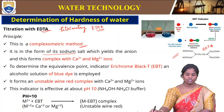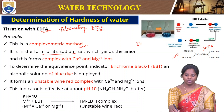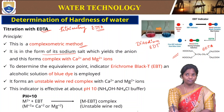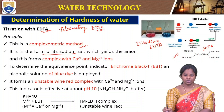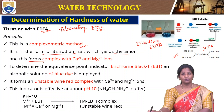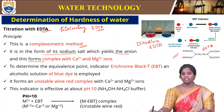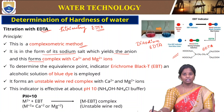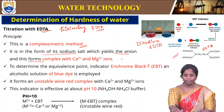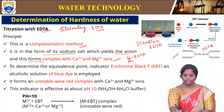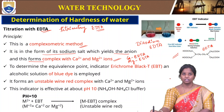EDTA is in the form of disodium salt — disodium EDTA — which yields the anion, and this forms a complex with the calcium and magnesium ions. As we have seen in our previous sessions, most of the hardness-causing salts are due to calcium and magnesium cations. These cations are complexed with EDTA to form calcium-EDTA or magnesium-EDTA complexes.